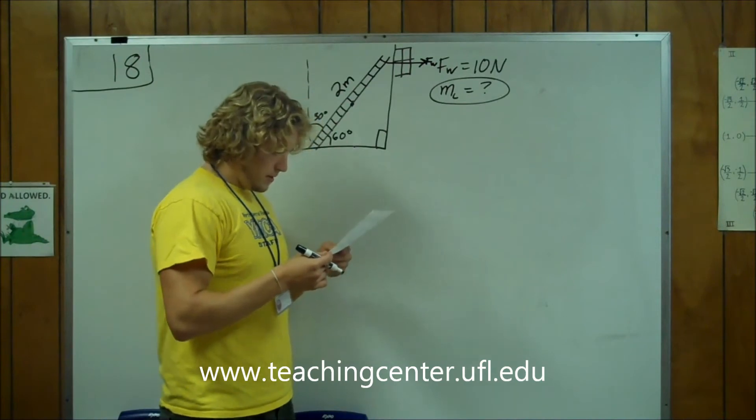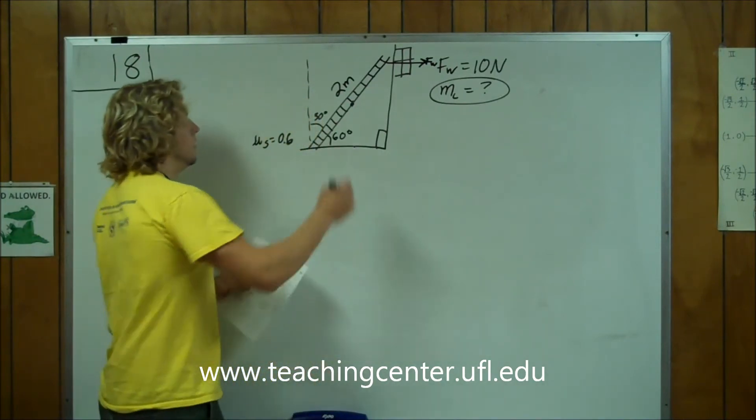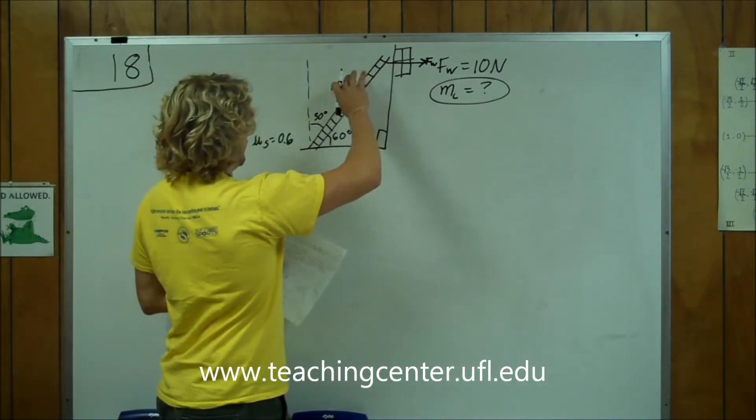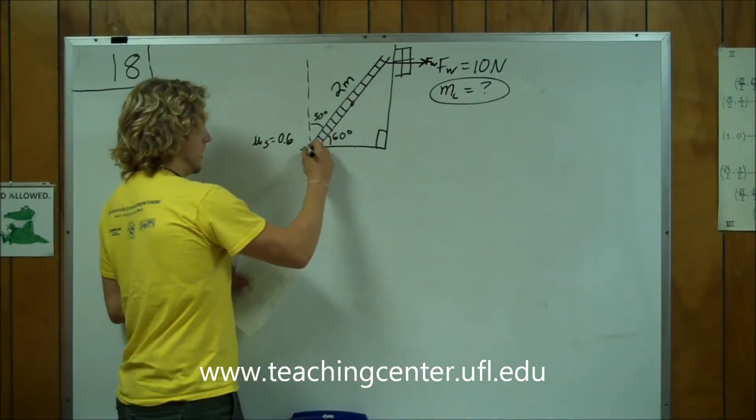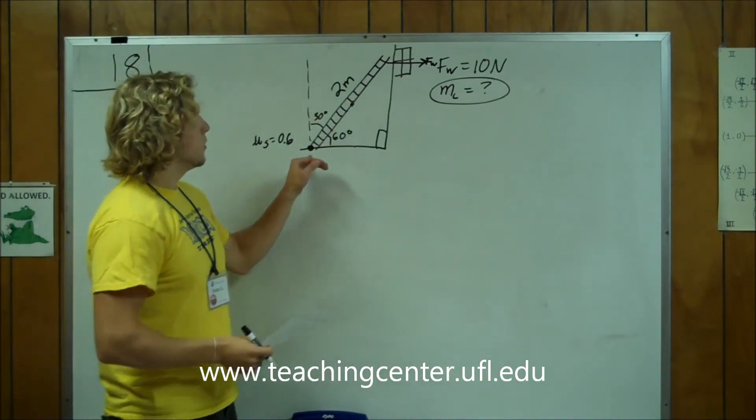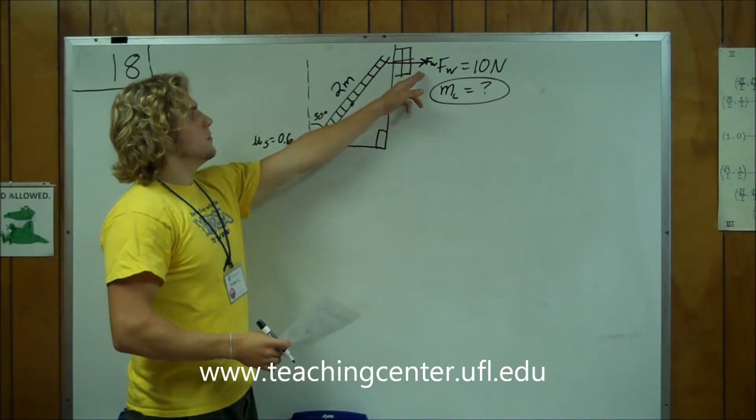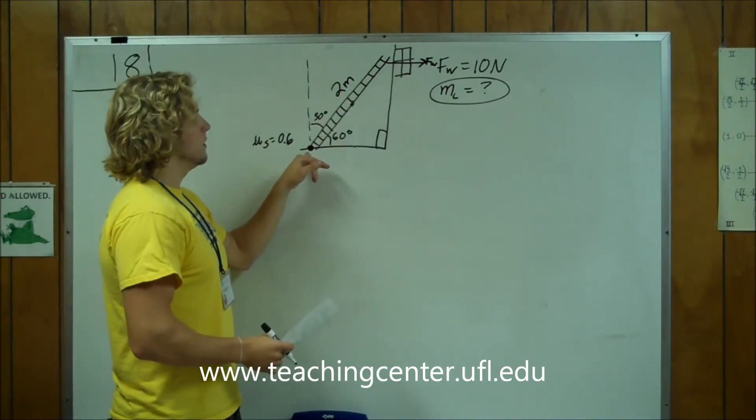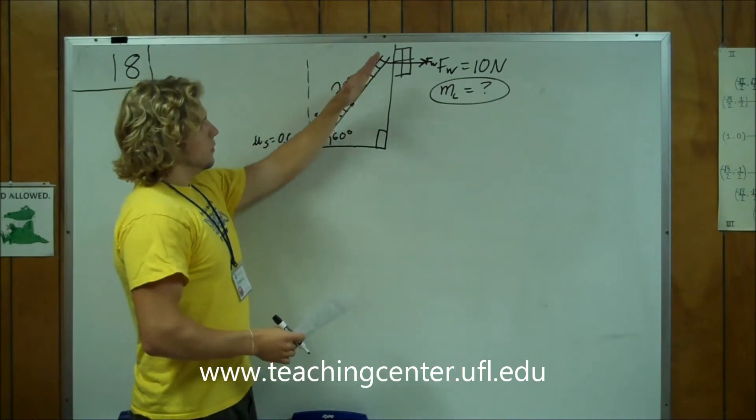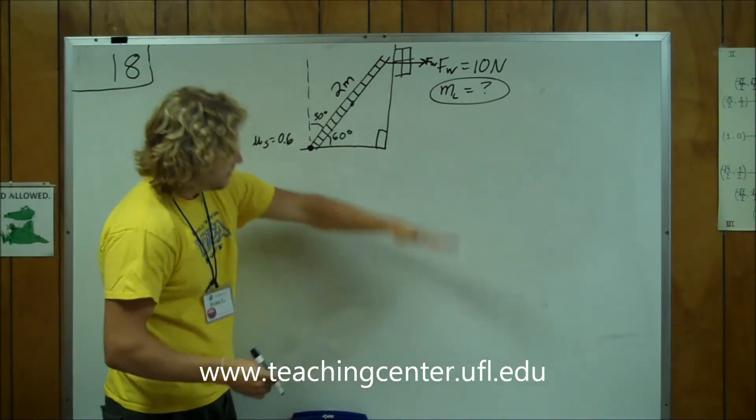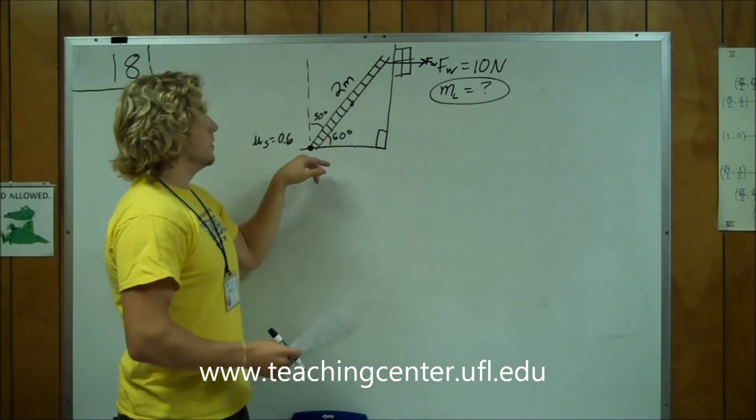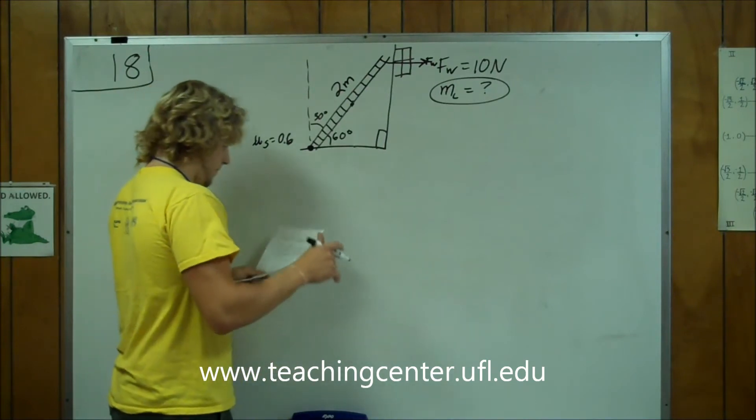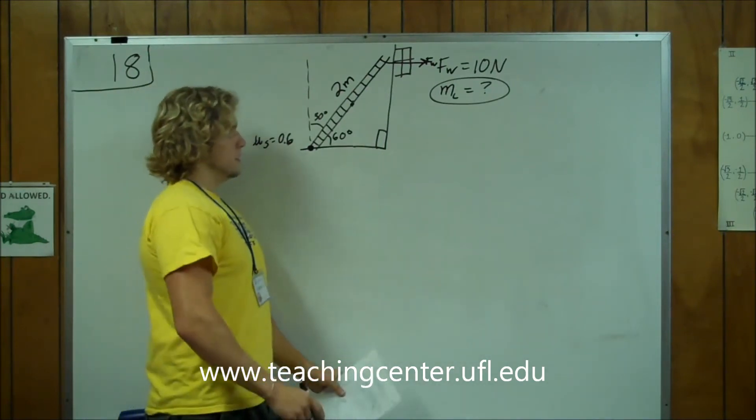And so that means that that's the force FW. That means that we're rotating around here. This is going to be a torque problem. This is the force that we're dealing with, so we're going to be rotating around this point. So we're dealing with the circle of the ladder. This is the point of origin.